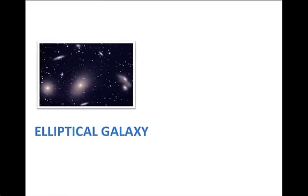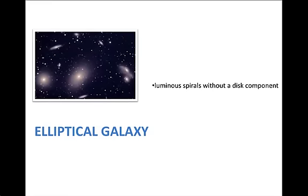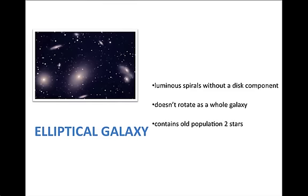An elliptical galaxy, on the other hand, has luminous spirals without a disk component. It doesn't rotate as a whole galaxy, and it contains old population two stars.